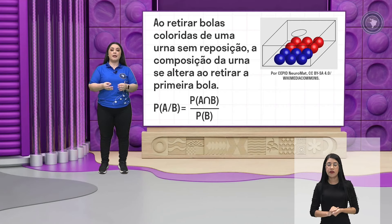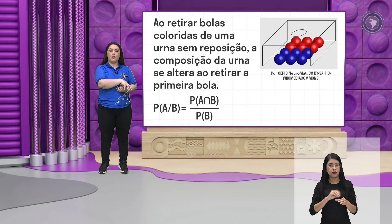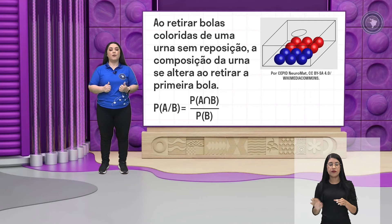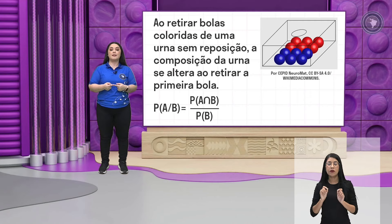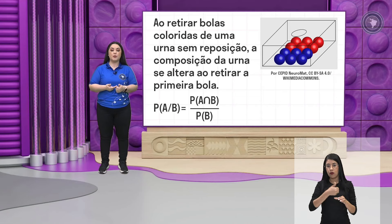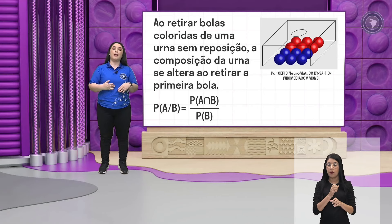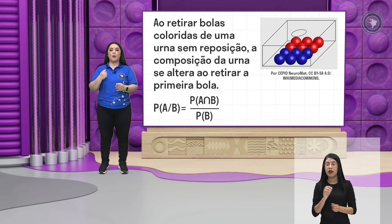Seja um evento retirar uma bola — eu vou retirar esta bola daí e, como diz que é sem reposição, eu não vou colocar a bola novamente na urna. Então, ao invés de 12, vão ficar somente 11 bolas na urna. Isso seria um evento que está dependendo do outro. Se eu retirar a primeira bola, eu vou ter 12 bolas disponíveis, então o meu espaço amostral vai ser 12. E se eu retirar uma segunda bola, eu não vou ter mais 12 opções, vou ter somente 11. Essa mudança no espaço amostral de 12 para 11 mostra que esses dois eventos são eventos dependentes.